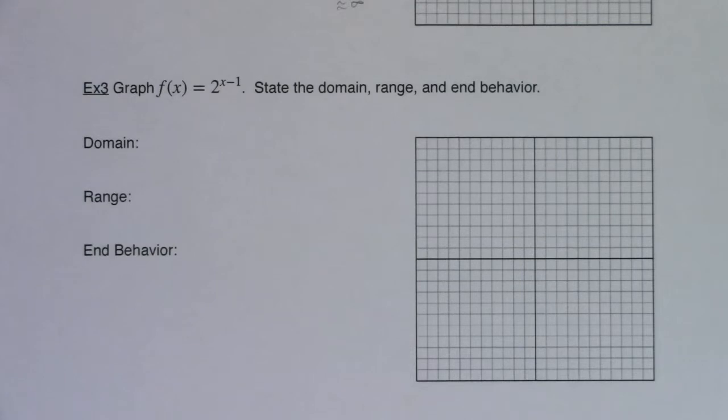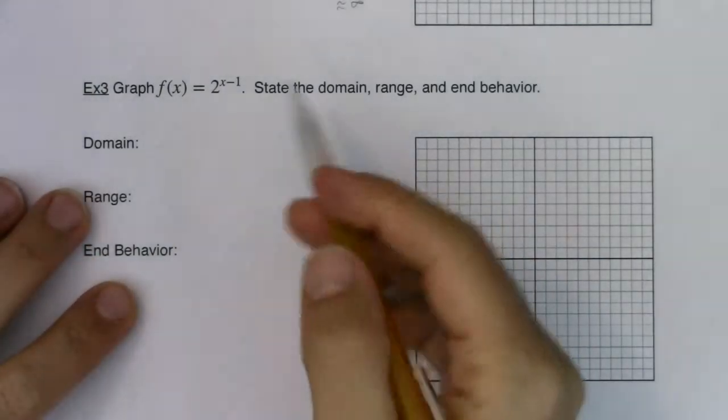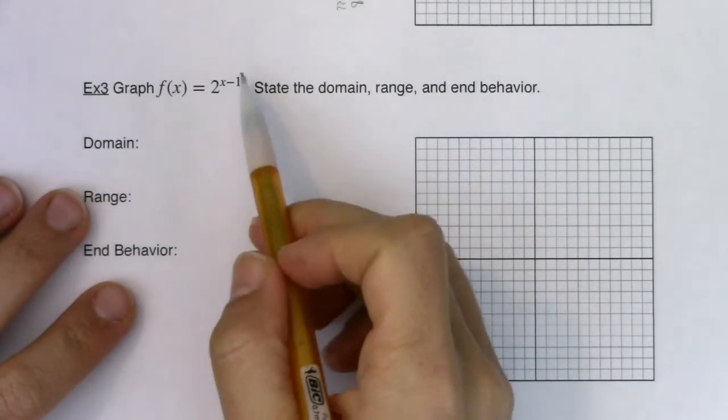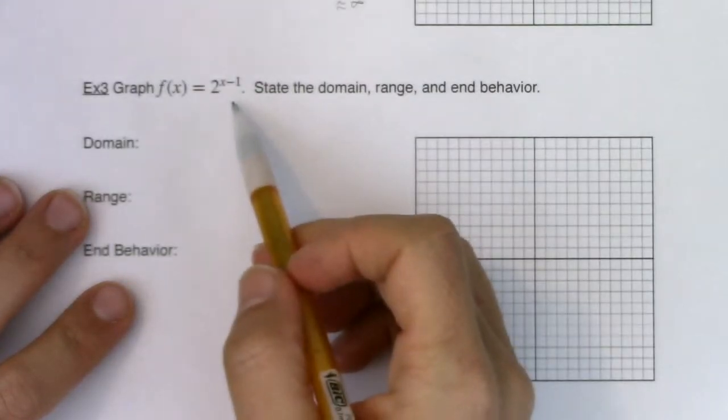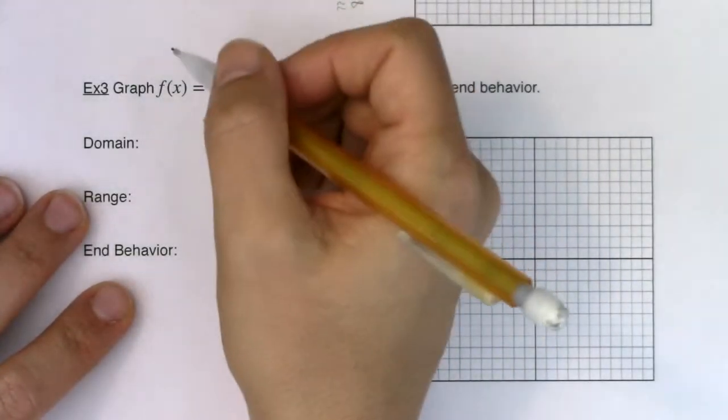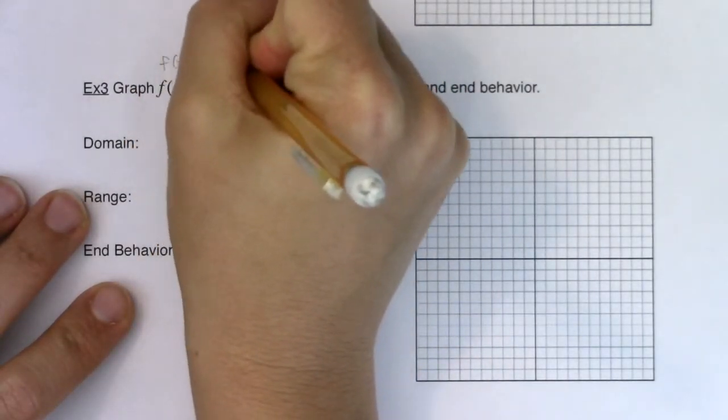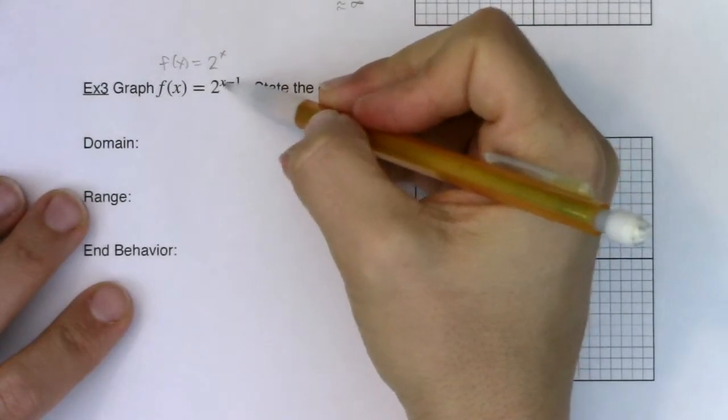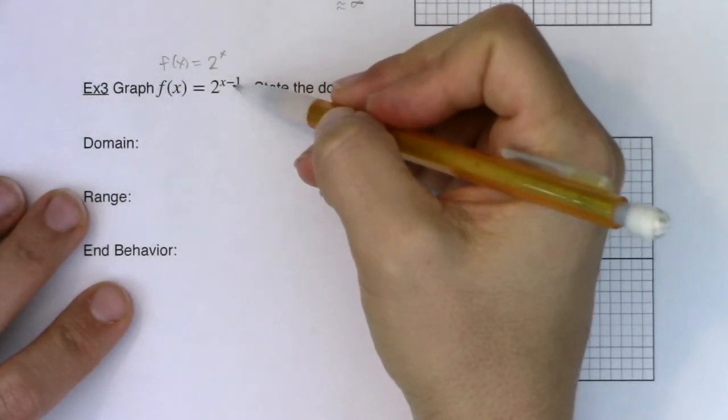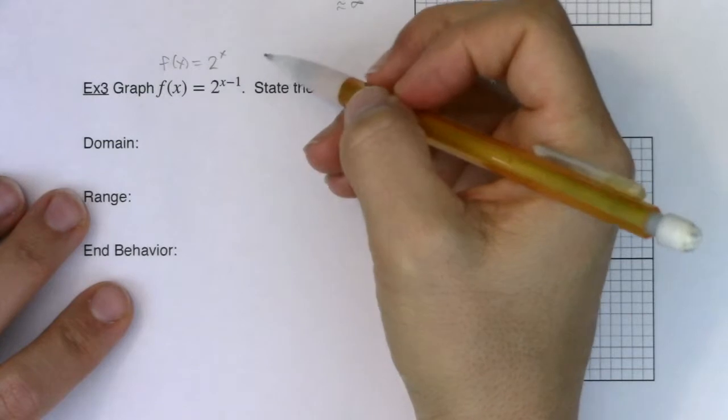Hey Mount 31, welcome to example 3. This time we have the function f(x) = 2^(x-1). This is pretty similar to the example 2 function. I'm just going to write the example 2 function up here so we can recall it. We had 2^x in example 2, and we have 2^(x-1) in example 3.